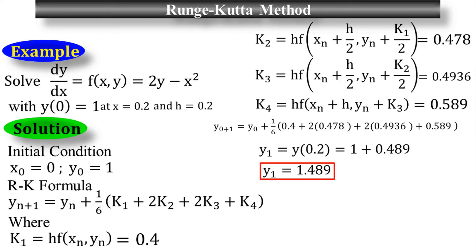This problem took only one process to get the answer, because the value of x₁ equals 0.2, which equals the step size h equals 0.2. In the next lecture, we will do one more tutorial where the problem takes two processes to get the final answer.